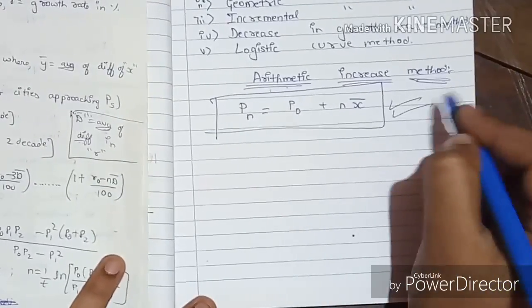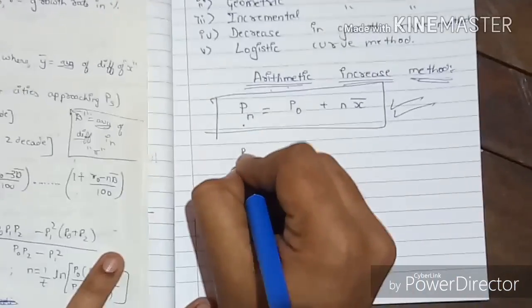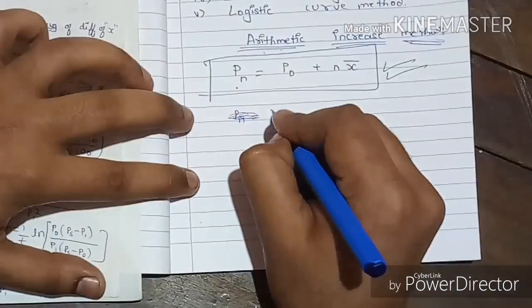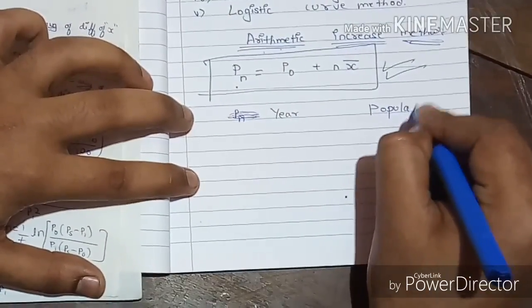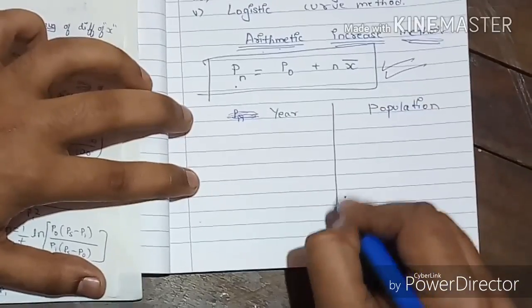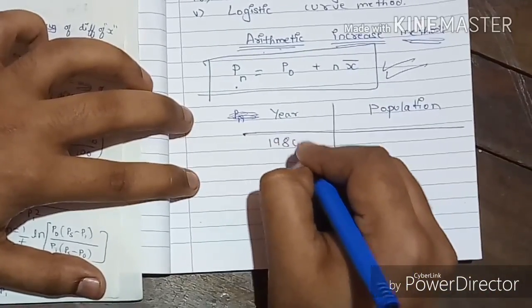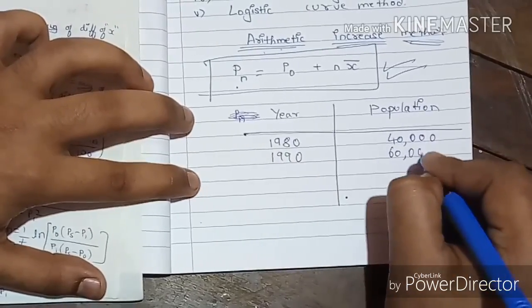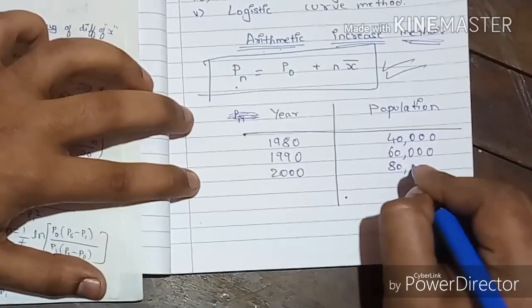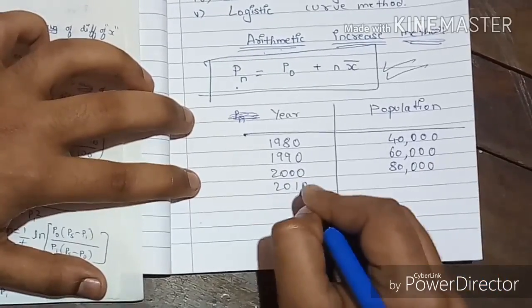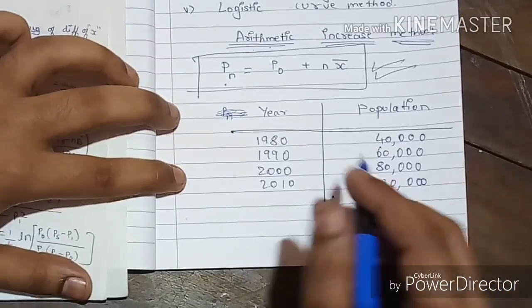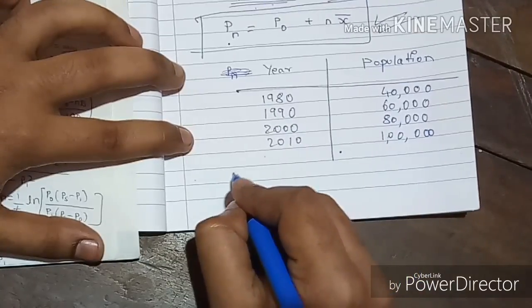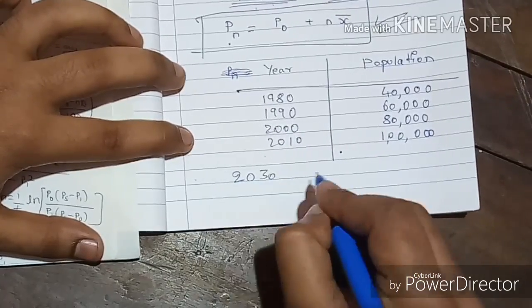Here, Pn is the population at the nth decade. The question will typically give you a table of year and population. For example: in 1980 the population is 40,000; in 1990 it is 60,000; in 2000 it is 80,000; in 2010 it is 1 lakh. They will then ask you to find the population in a future year, say 2030.